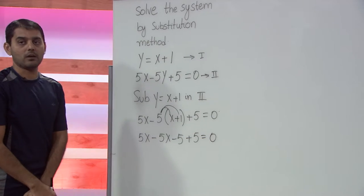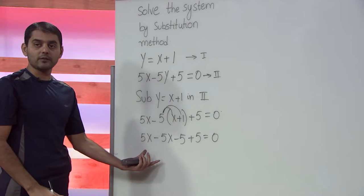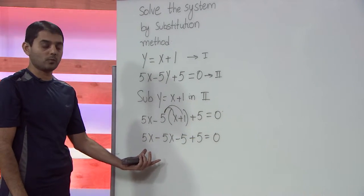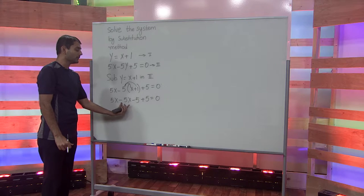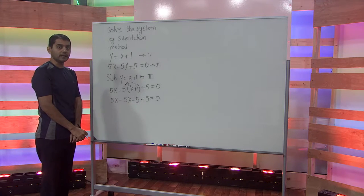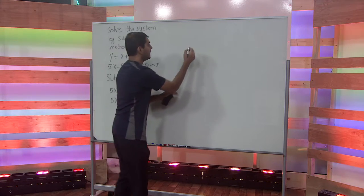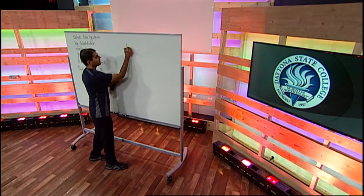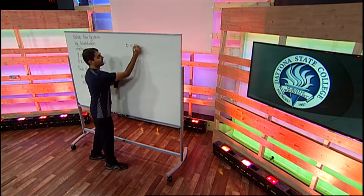On the left-hand side of this equation, we have two terms with the variables and two terms with the constants. Combining the like terms, we get 0 equals 0.